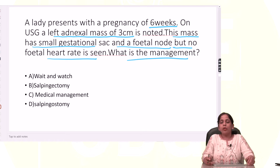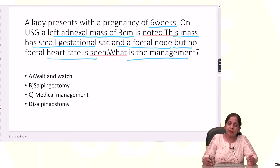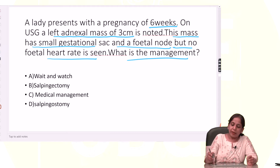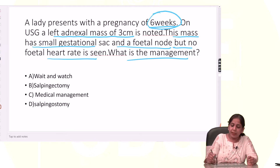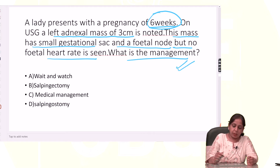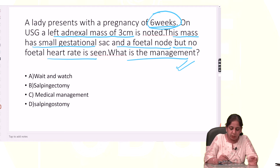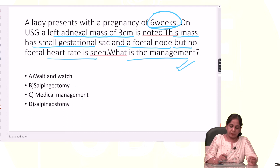What is the management? We know from the question that this is a case of tubal ectopic around 6 weeks. The options are: wait and watch, surgery, salpingectomy, medical management, and surgery — salpingostomy.